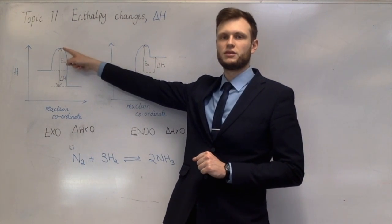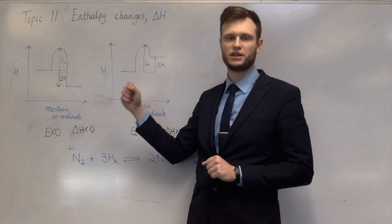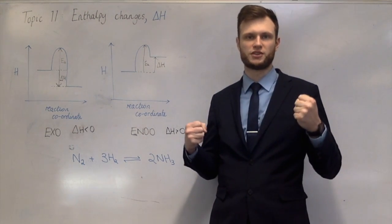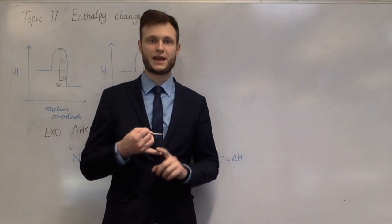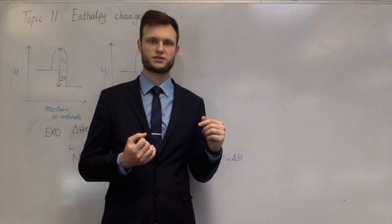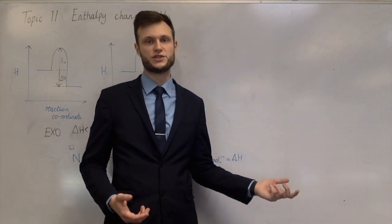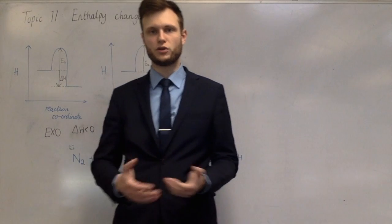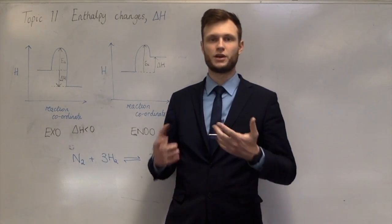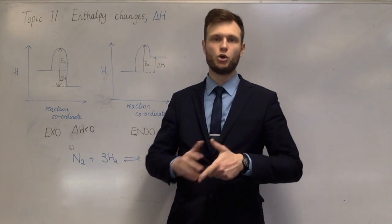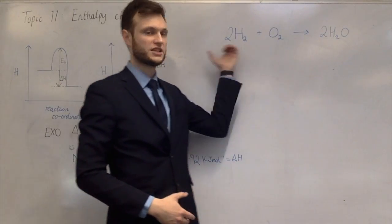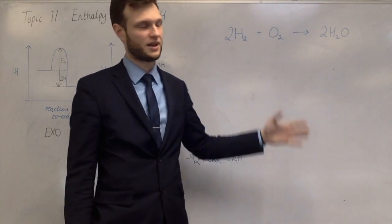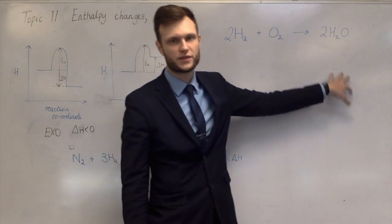If the energy used to break the bonds is less than the energy released when making the bonds, it's exothermic. If the energy to break bonds is more than the energy released making bonds, it's endothermic. You need to calculate a theoretical enthalpy change using average bond enthalpies of reactants and products. I'll do a simple example — the combustion of hydrogen. You need the H–H, O=O double bond, and O–H bond enthalpies. You draw the chemicals, identify all bonds, add up bond enthalpies for the left-hand side, add up those for the right-hand side, then do left minus right.